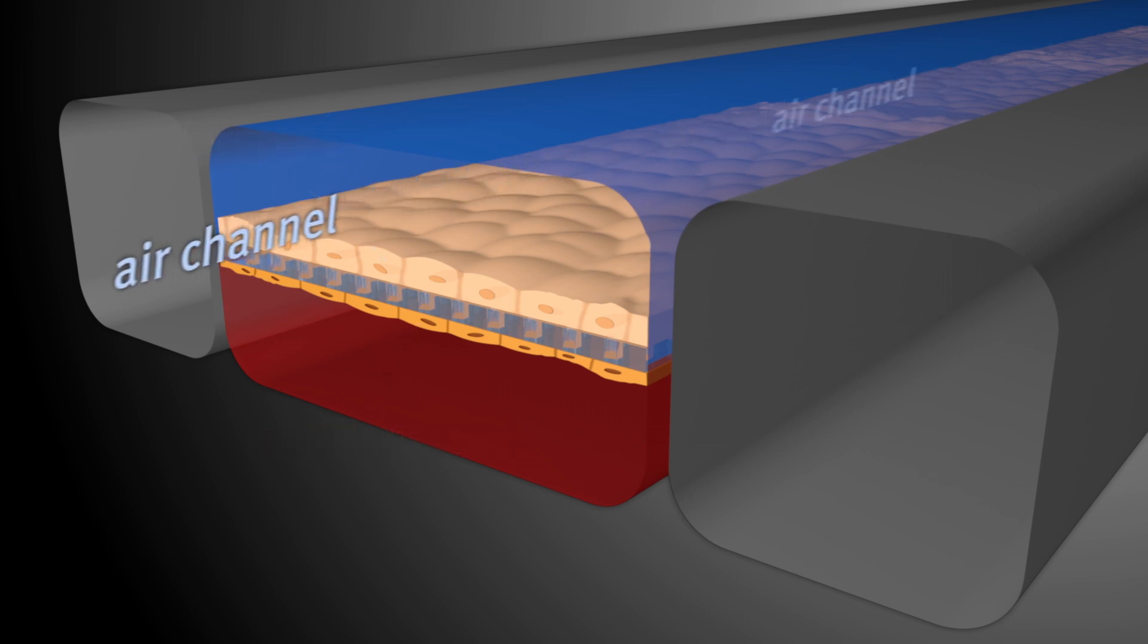In the device, air flows over the top of the human lung cells and liquid medium containing white blood cells flow below the capillary cell layer.